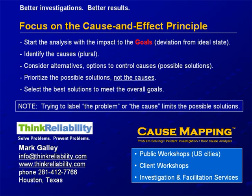The differentiation should always be on the solutions. Some solutions are more effective than others, and that Hubble example illustrates that point. You select the best solutions to meet the overall goals. This idea of trying to label the problem or the cause really does limit your solutions.